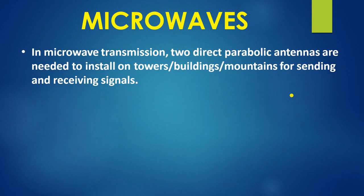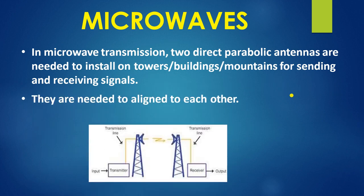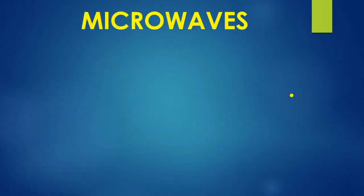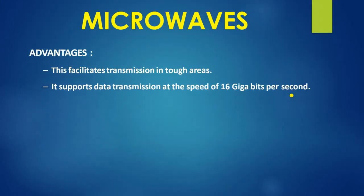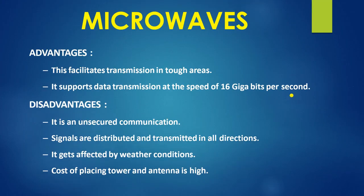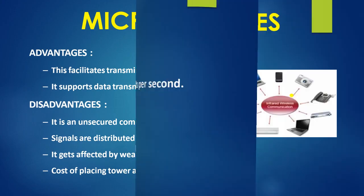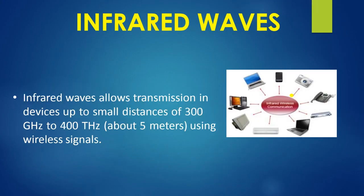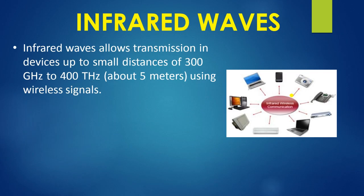Microwave communication requires installing two direct parabolic antennas so that they can send and receive signals. These are the advantages and disadvantages of microwaves.